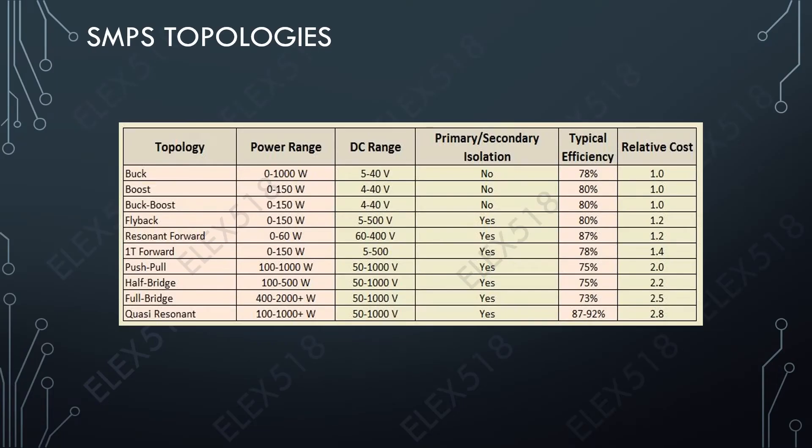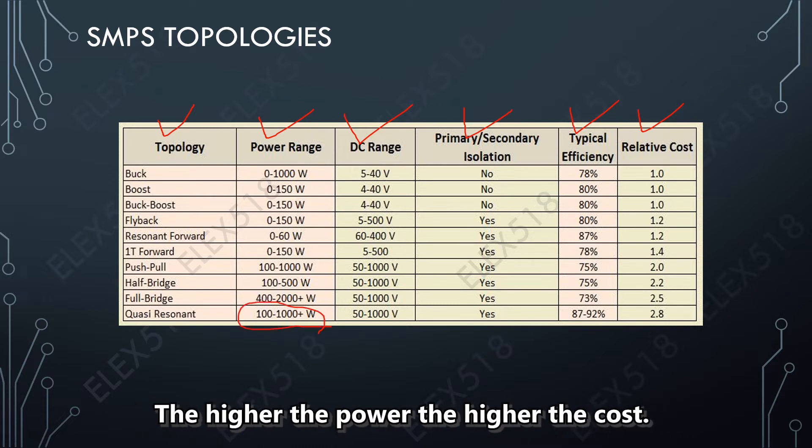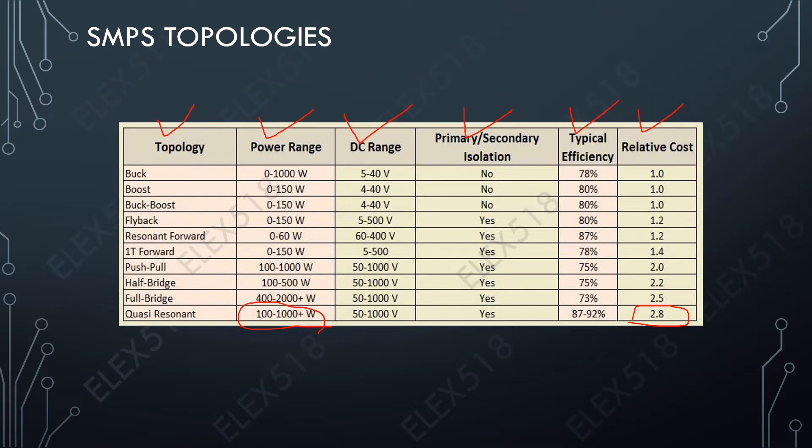Before I proceed to troubleshooting tips, I would like to show you first a list of SMPS topology. As you can see from the table, we have topology name, power range, DC range, and also if the SMPS has primary secondary isolation. We have the typical efficiency and also the relative cost. Notice that the more power the SMPS has, the more expensive it is.